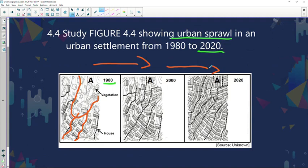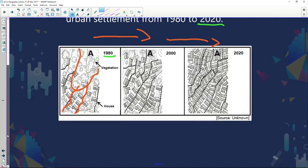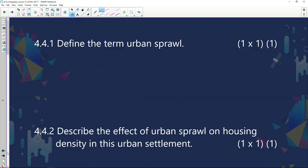So if we go to the questions quickly and we look at the grid, define the term urban sprawl. First of all, the first thing I can say is it's like an unplanned shapeless expansion of the city.